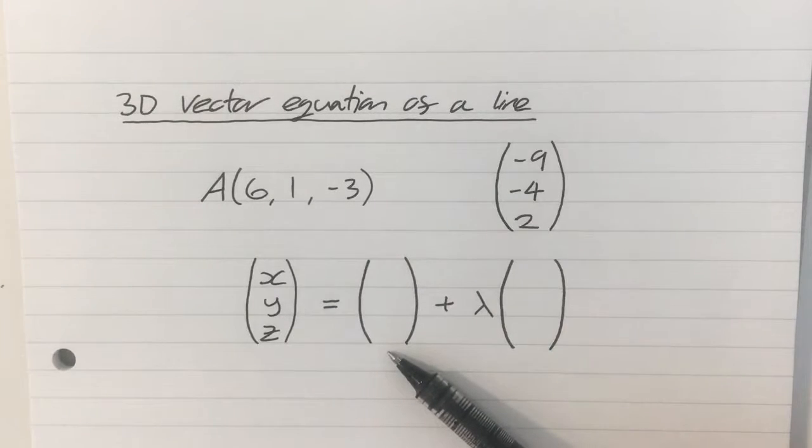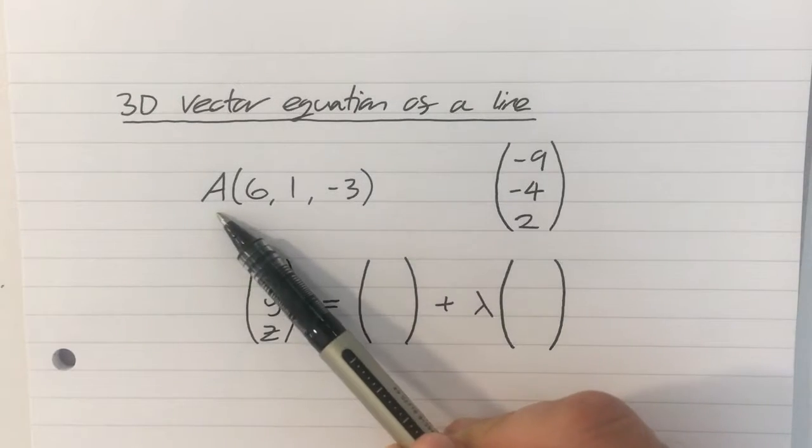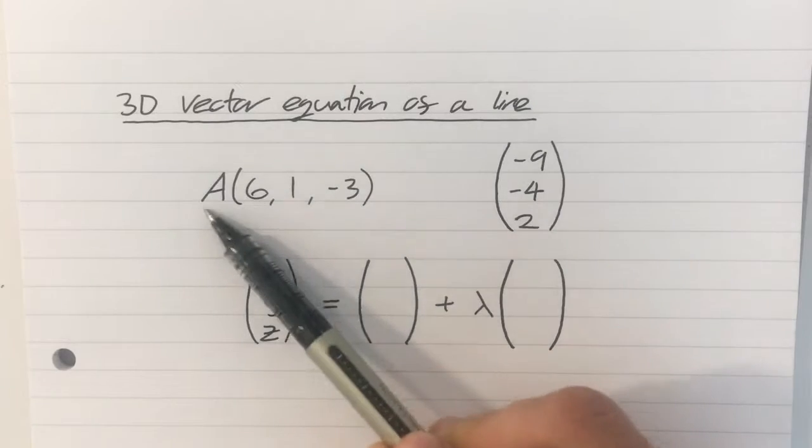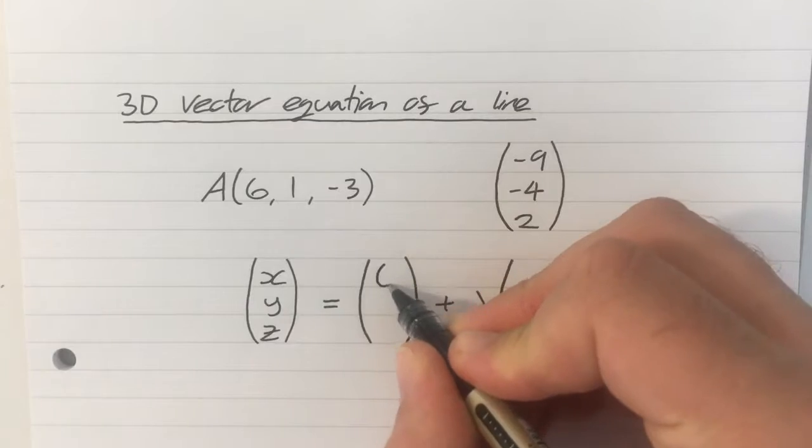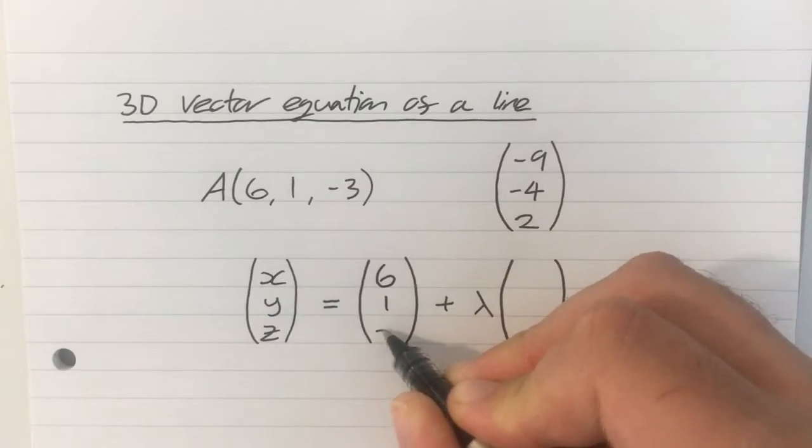So the vector that is the position vector of any point on the line, well, we're told that this point here is a point on the line. Therefore, the position vector of this point can be put here, so 6, 1, minus 3.